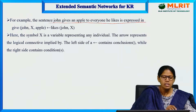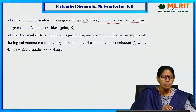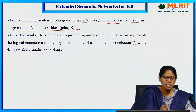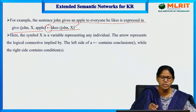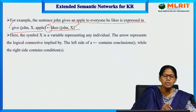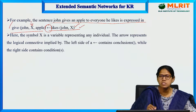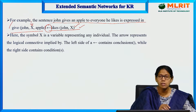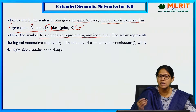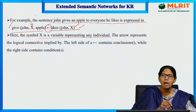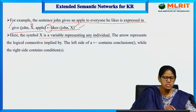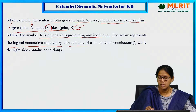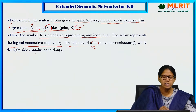When John likes X, then John gives an apple to X — that is the meaning of this representation. The symbol X is a variable representing any individual; it can be any actual value. The arrow represents the logical connective 'is implied by.' The left side of the implied symbol contains the conclusion and the right side is the condition. When this condition is satisfied, then only this conclusion will happen.